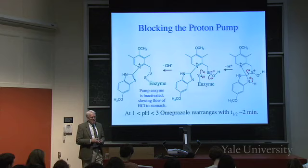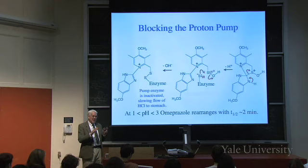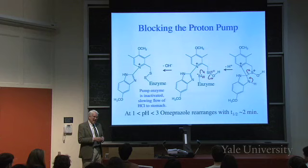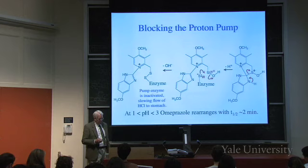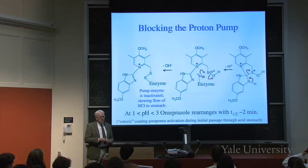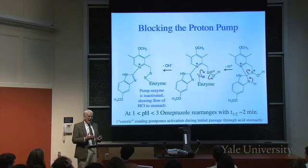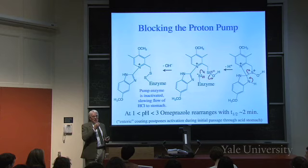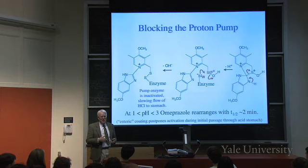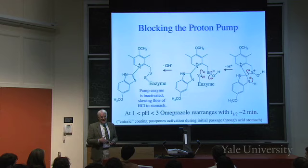The pump which takes acid that's made in the cells that line the stomach and transports the acid into the stomach doesn't work anymore, because that enzyme is what did the trick. The pump enzyme is inactivated and the flow of HCl to the stomach is stopped. And this is an interesting problem in the design of the drug, because it's acid that causes this to happen in two minutes. But you don't want it to happen until it gets into the cells that line the stomach.